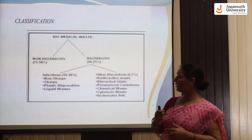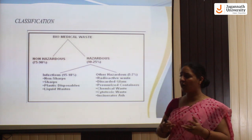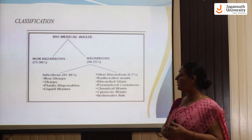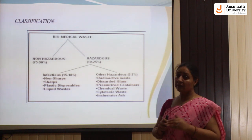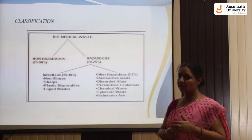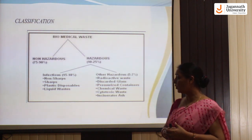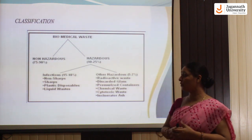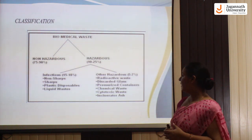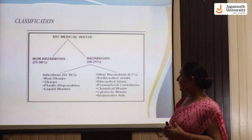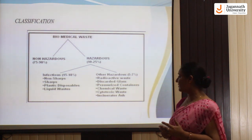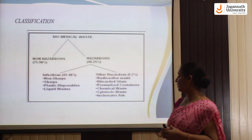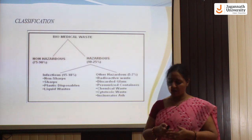Infectious waste may include non-sharps without needles, syringes, or cutters; sharps waste including needles, syringes, scalpels, and cutters; plastic disposables; and liquid waste. Other hazardous categories include radioactive waste, discarded glasses, containers, pressurized containers, chemical waste, and cytotoxic waste.